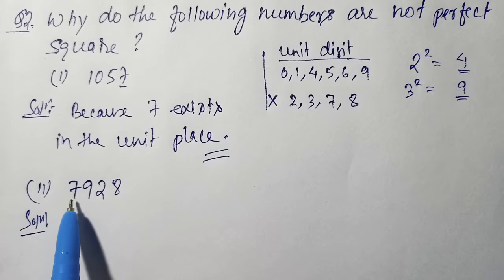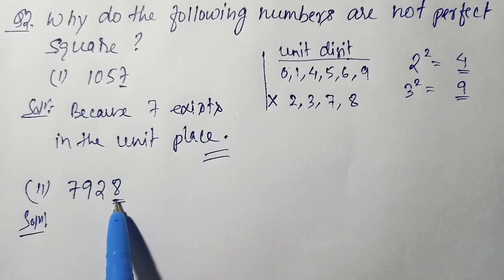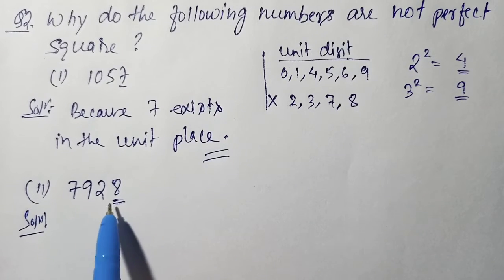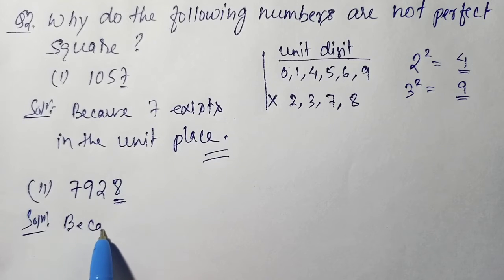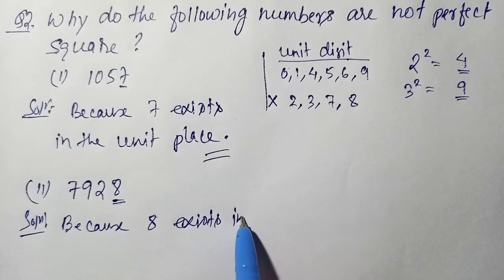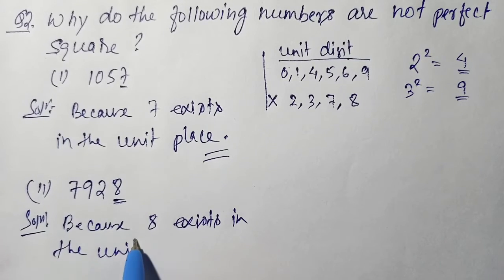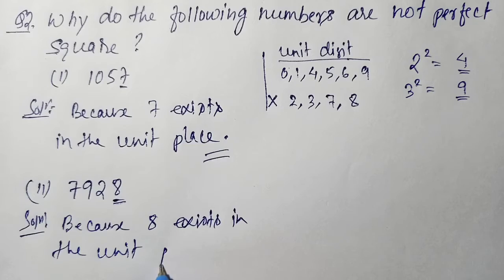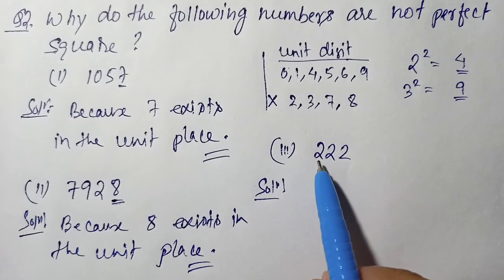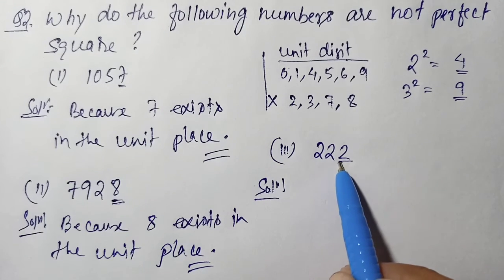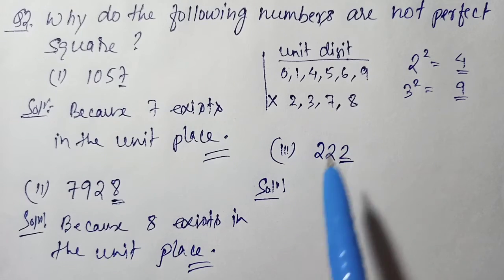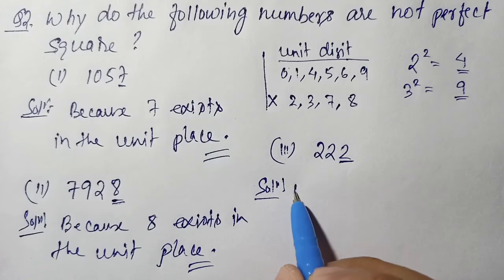Question number 2: the number is 7928. Here also the unit digit is 8. We know that if the unit digit is 8, that number cannot be a perfect square, so the reason is the same — because 8 exists in the unit digit. Question number 3: the number is 222. Here the unit digit is 2, so the reason is because 2 exists in the unit digit.